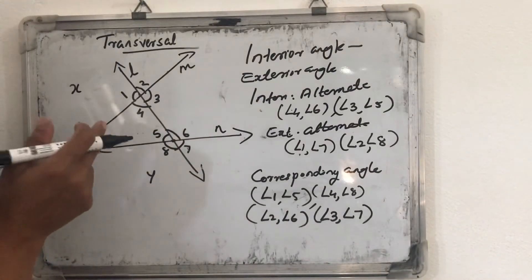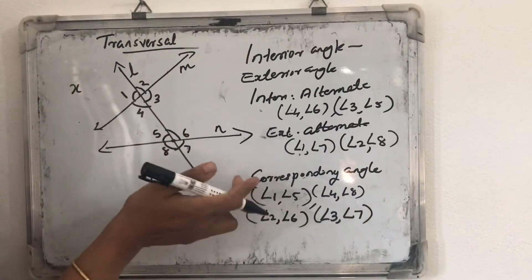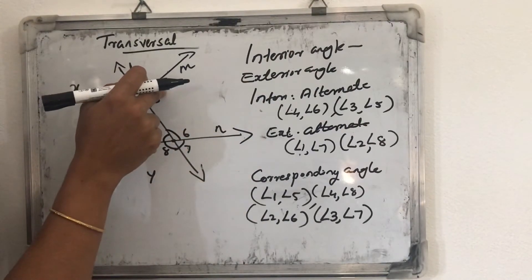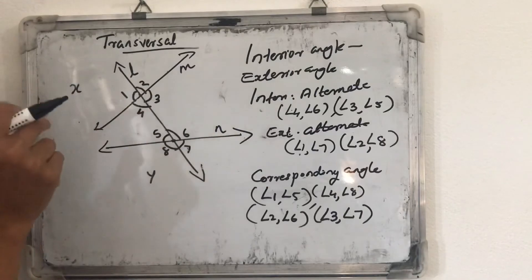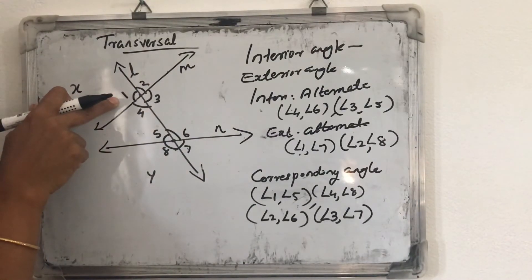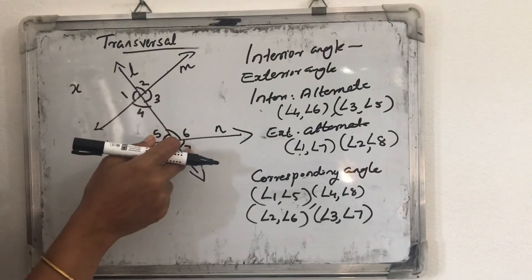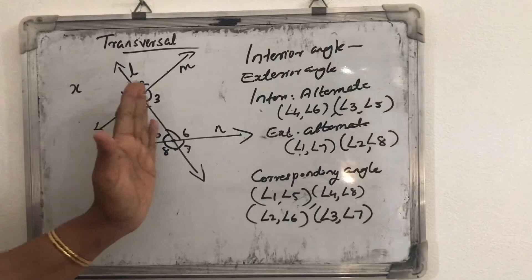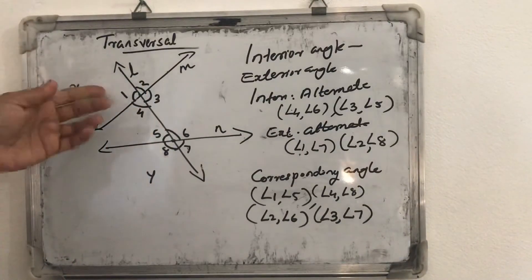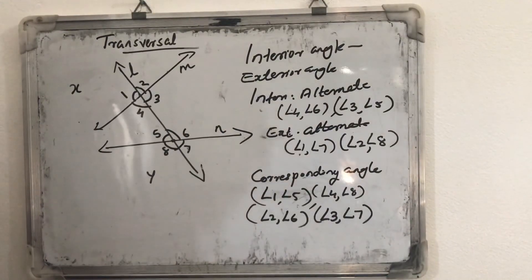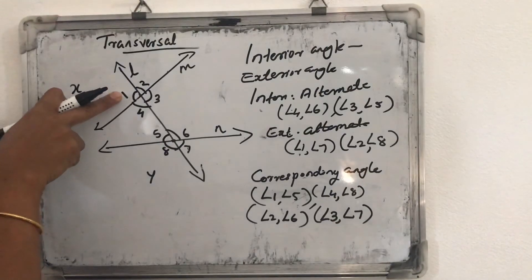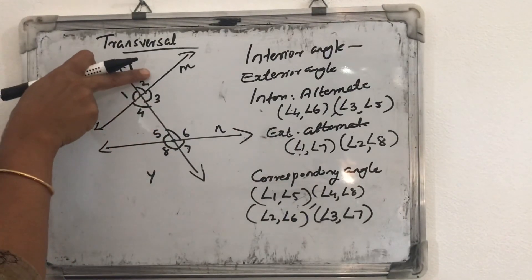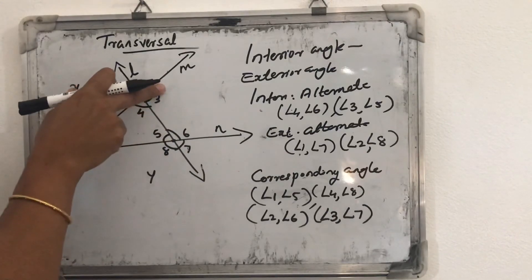Then alternate interior angles: angle 4 and angle 6 are alternate interior angles; angle 3 and angle 5 are alternate interior angles. Alternate exterior angle of angle 1 is angle 7; alternate exterior angle of angle 2 is angle 8. Next, corresponding angles means the angles formed on the same side of the transversal where one is exterior and one is interior. Corresponding angle of angle 1 is angle 5; corresponding angle of angle 4 is angle 8; corresponding angle of angle 2 is angle 6; corresponding angle of angle 3 is angle 7.